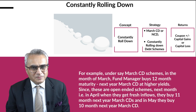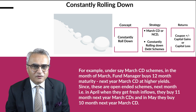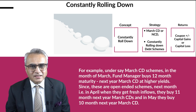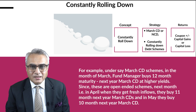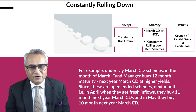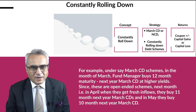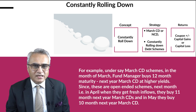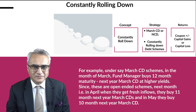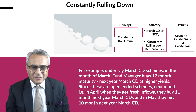Let me explain this with an example of the March CD concept. In the month of March, because there is an outflow due to advance tax and government year-end spending, interest rates tend to go up. Fund managers capture these higher yields in March by buying a one-year CD or NCD maturing in the next March.